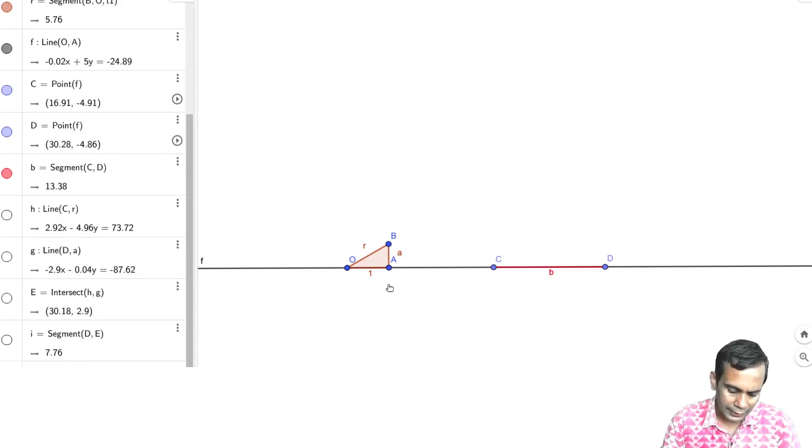So I'm just going to mark off little a along this perpendicular line. So I have this right-angled triangle O, A, B. And the idea is to construct another right-angled triangle whose base is B. So how do you do that?